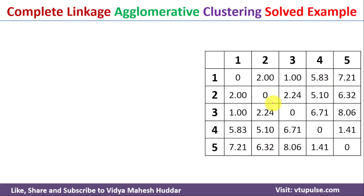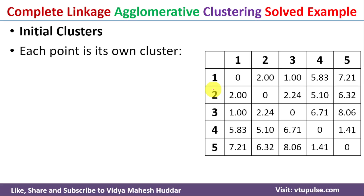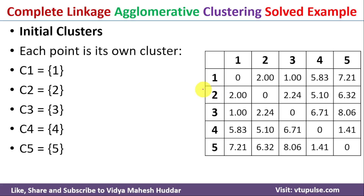Once we find all the distances, we consider the initial clusters. Here all the data points are considered as their own clusters. Since we have 5 data points, we get 5 clusters: C1, C2, C3, C4, and C5. After that we need to find the minimum distance among all the distances.